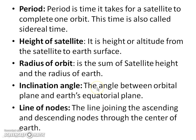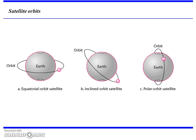Period is the time it takes for a satellite to complete one orbit; this time is also called the sidereal time. Height of satellite is the altitude from the satellite to the earth's surface. Radius of orbit is the sum of the satellite height and the radius of the earth. Inclination angle is the angle between the orbital plane and the earth's equatorial plane. Line of nodes is the line joining the ascending and descending nodes through the center of the earth.